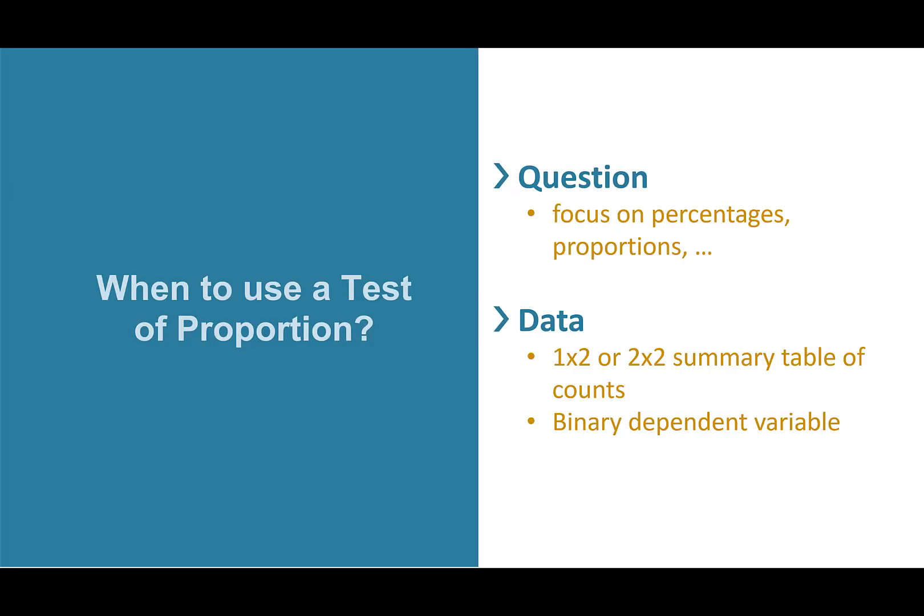All right, so when should you use a test of proportions? Well, you now know, start with a question. It's frequently going to say something like, what's the percentage of times something happens or the proportions of it? But more than that, you also need to look at the data. Clearly, you've got a binary dependent variable, yes or no. It has this property or it doesn't have this property. But also that summary table needs to be 1 by 2 or 2 by 2 in order for a 1 sample or 2 sample test of proportions to work. If you've got a bigger summary table, that's when you need to go to chi-square, which we cover in our next video. Thank you.